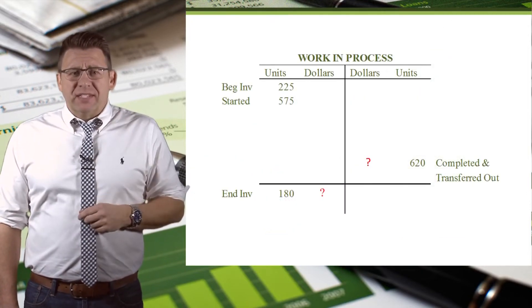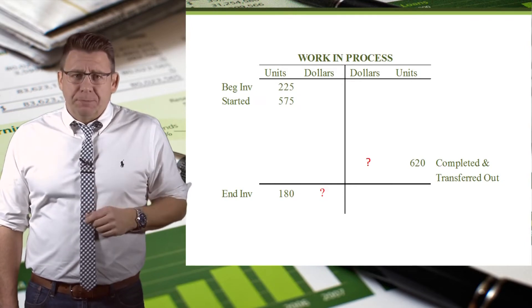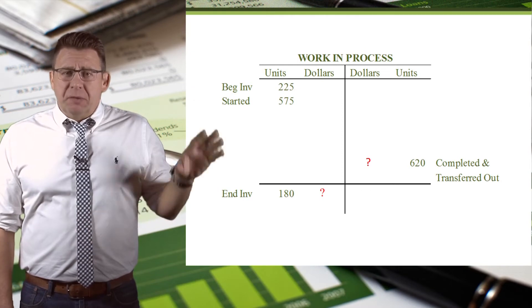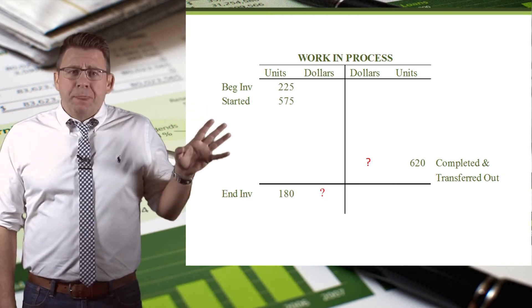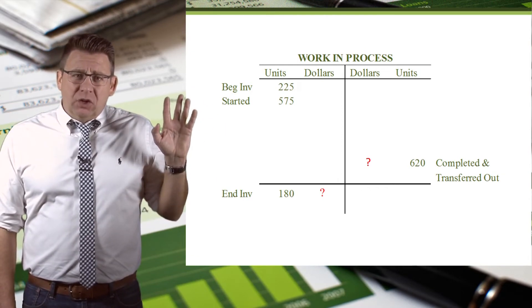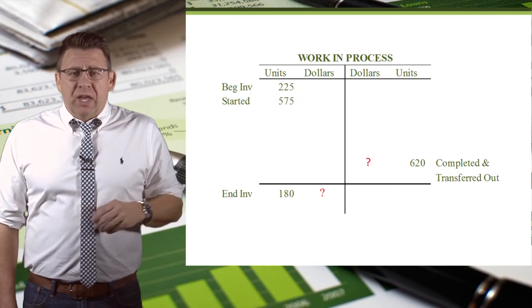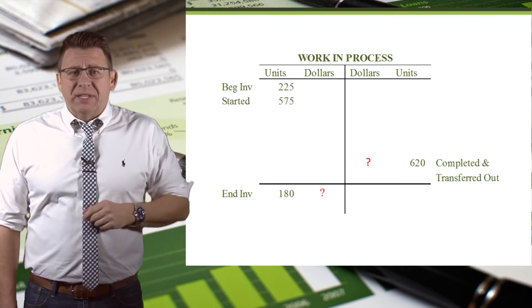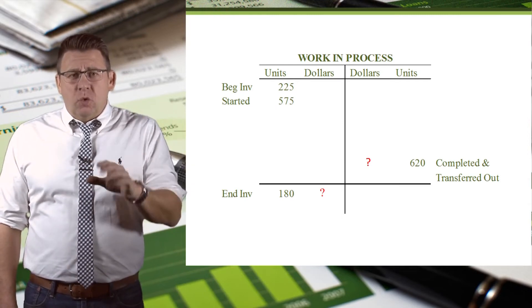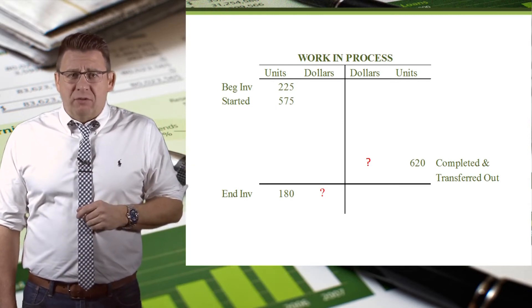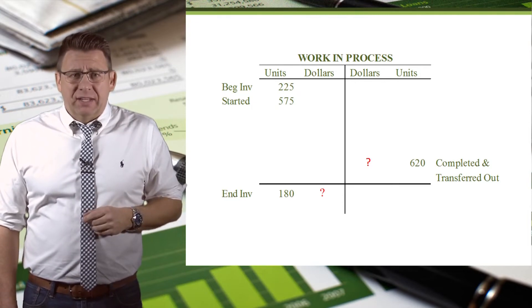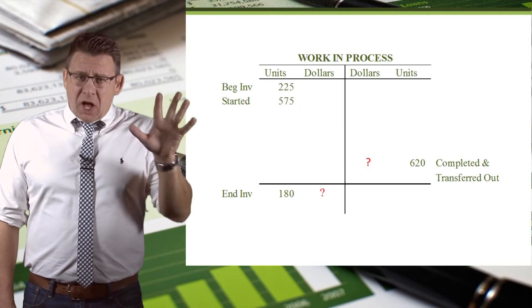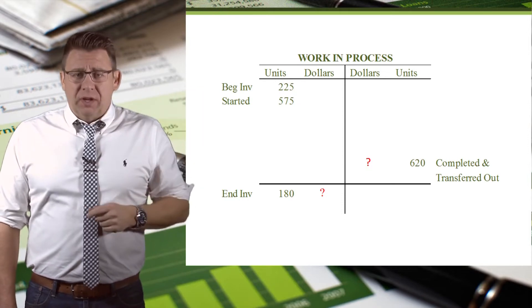Another way to look at this is with the WIP T-account. Visually, this is what's happening. You see beginning work in process and the units started on the debit side. The ending units are 180, and that's also on the debit side. 620 units were completed and transferred out, and that's on the credit side. Now these are just units — we will add dollars to them as we work through the remaining steps.